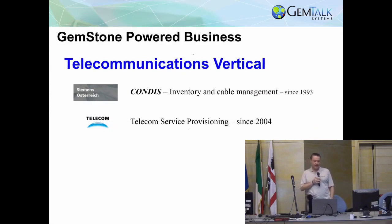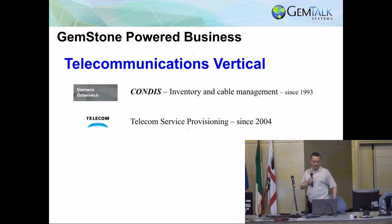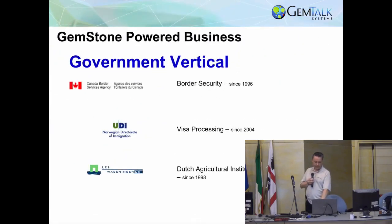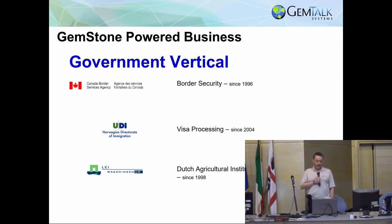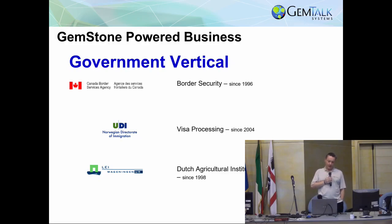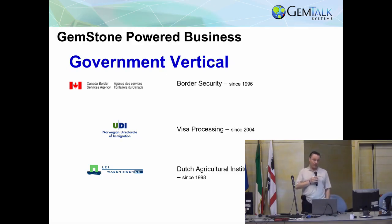In the telco space, we've got Siemens Austria, with an application called Condus that's been running for a long time. Also Telecom Argentina. In the government space, we're used by the Canadian Border Services Agency — they have an app that has to do with scanning passports and knowing who the smugglers are. In Norway, we do the visa processing for the immigration department. And in the Netherlands, the Dutch Agricultural Institute uses GemStone to track agricultural data from farmers all over the country.